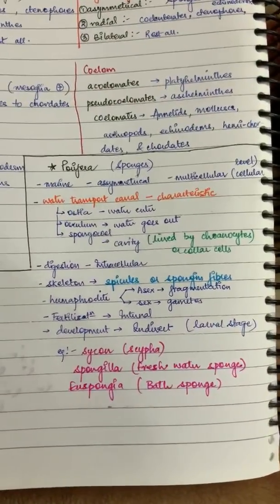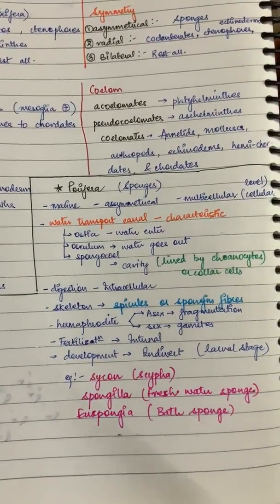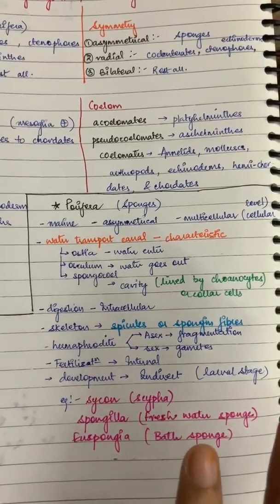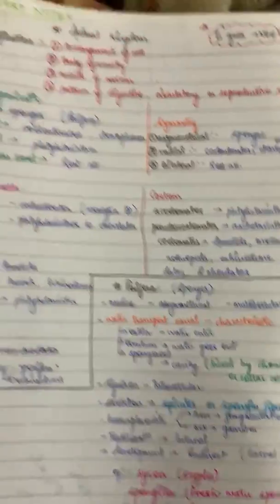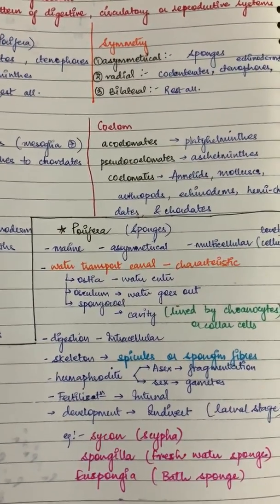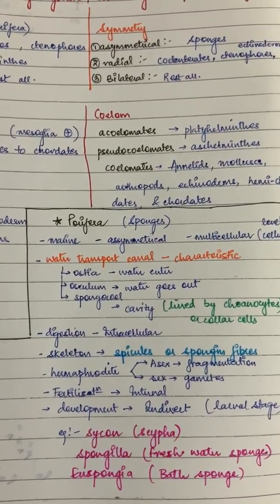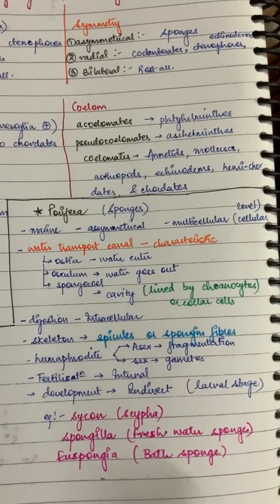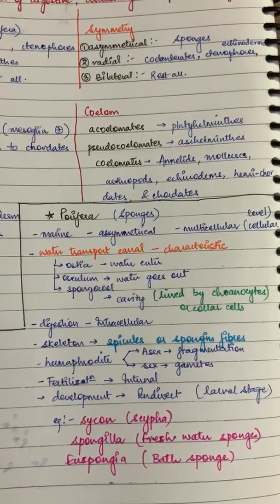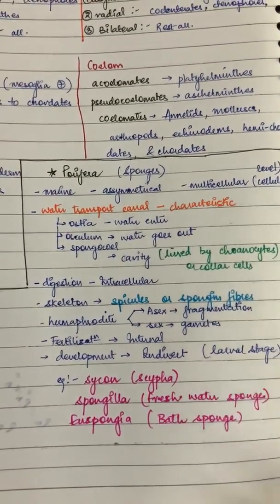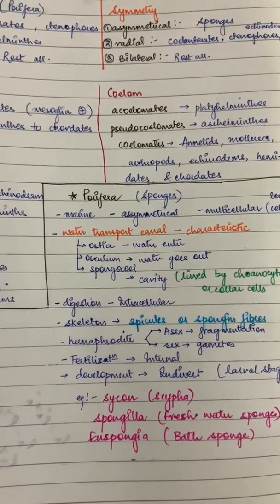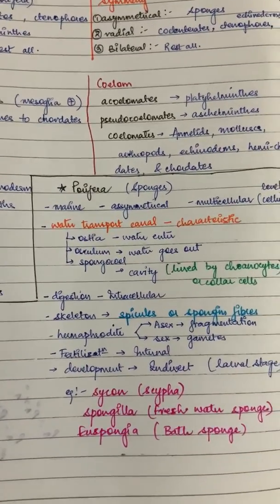Phylum Porifera is commonly called sponges. The main points I have noted are: they are marine animals, asymmetrical, and multicellular but with cellular-level organization. The characteristic feature - which is a very important point - is the water transport channel system, with parts including ostia, osculum, and spongocoel. Choanocytes (collar cells) are a characteristic feature of this phylum. Digestion is intracellular - you can be asked which phylum has intracellular digestion.